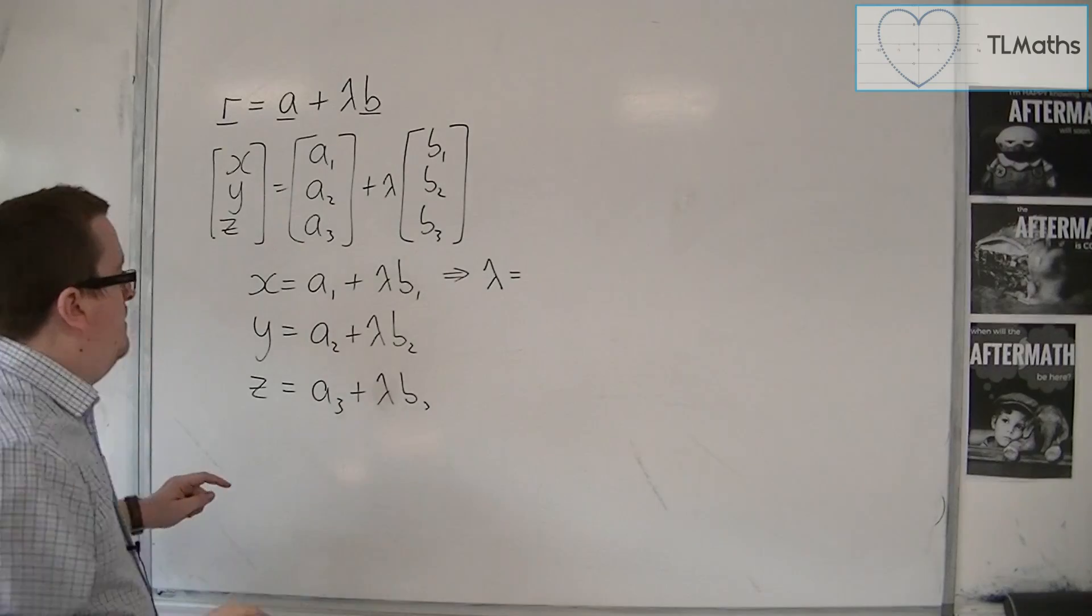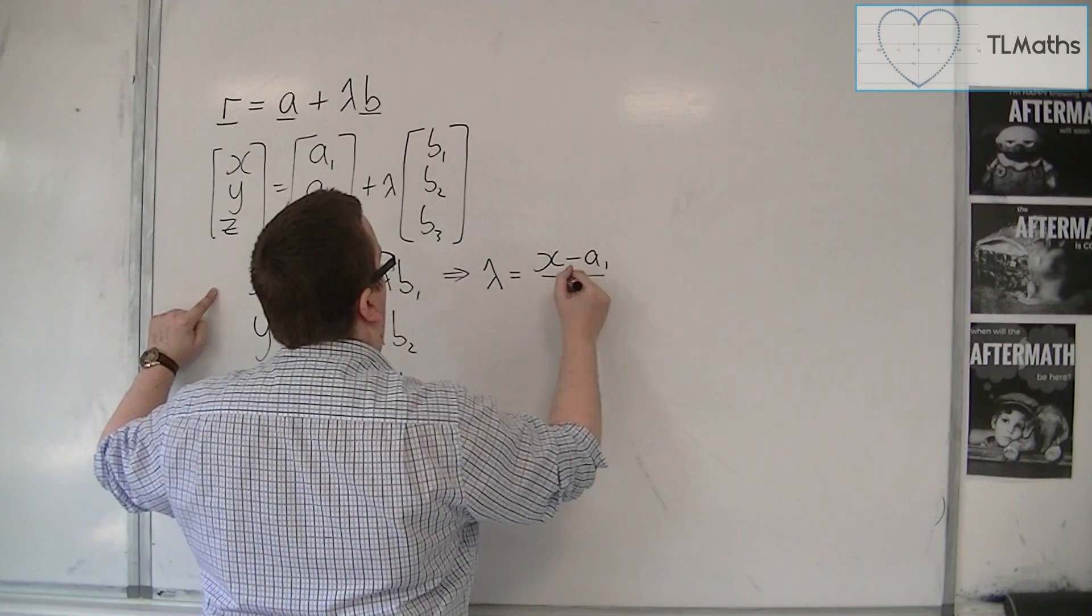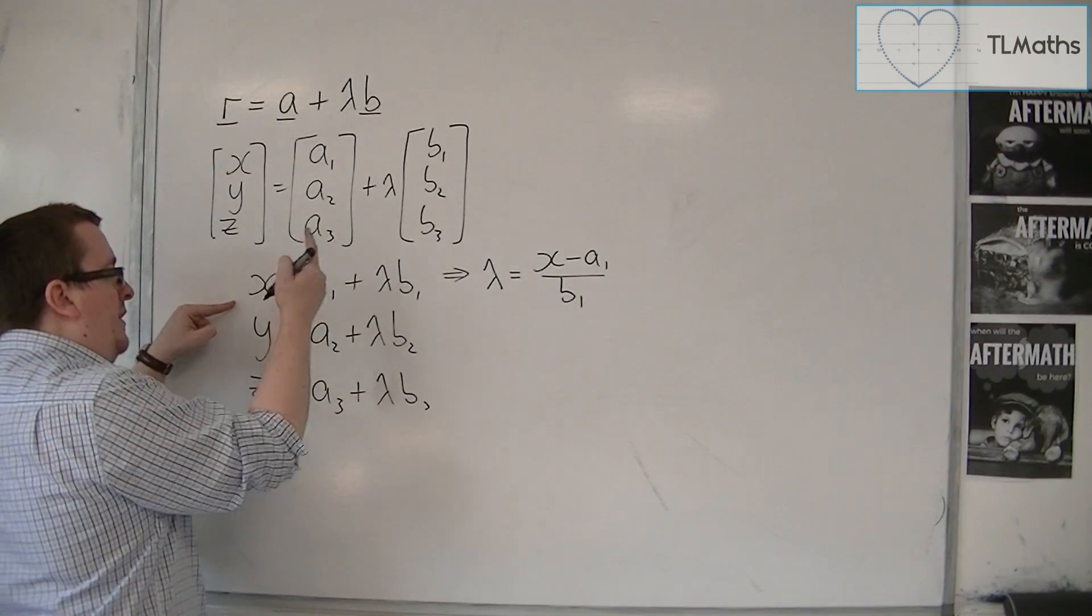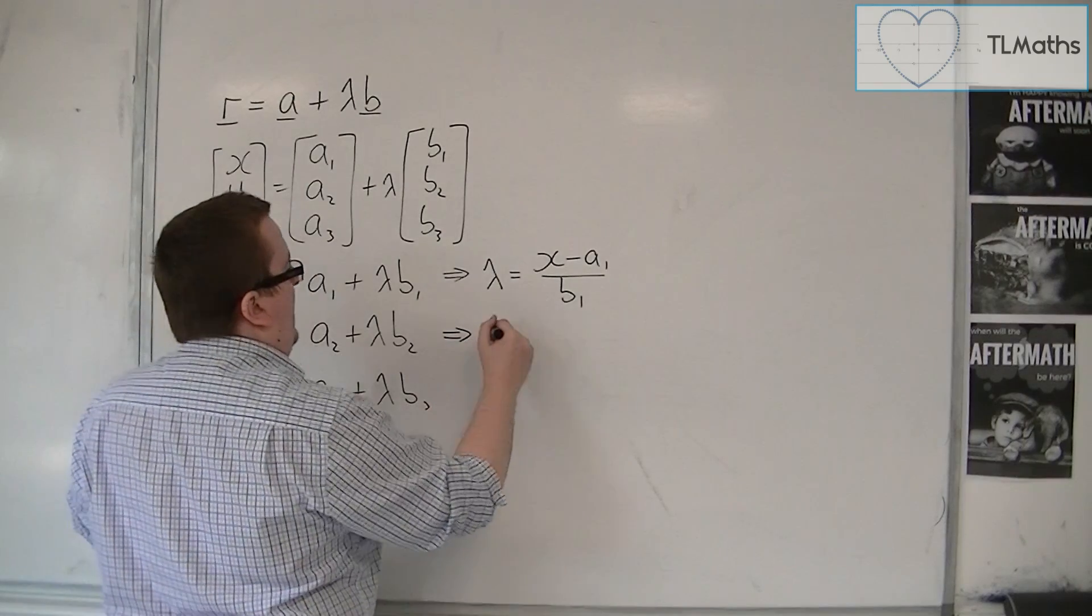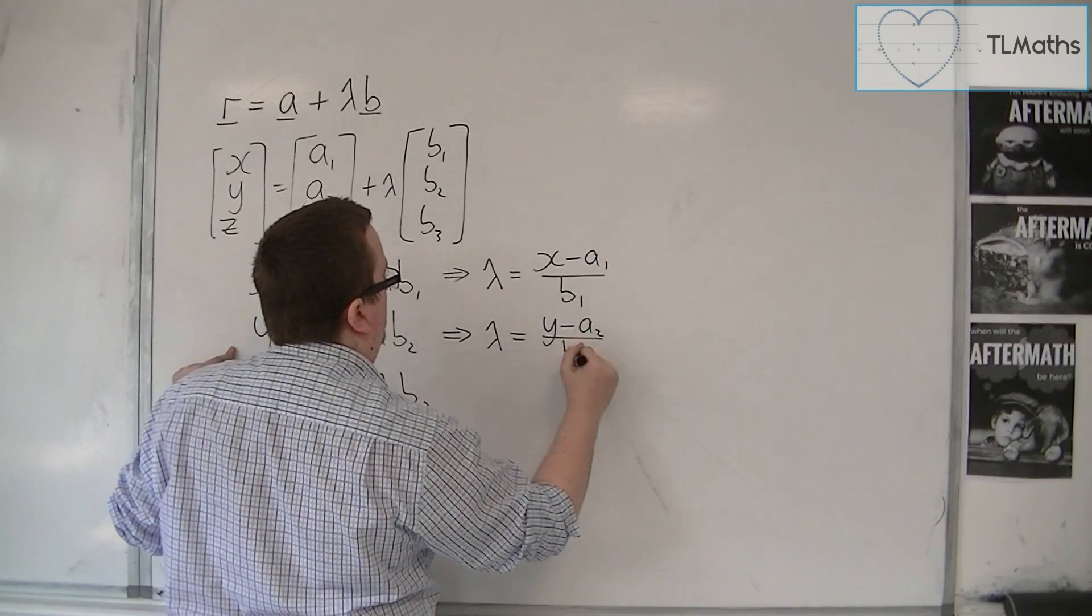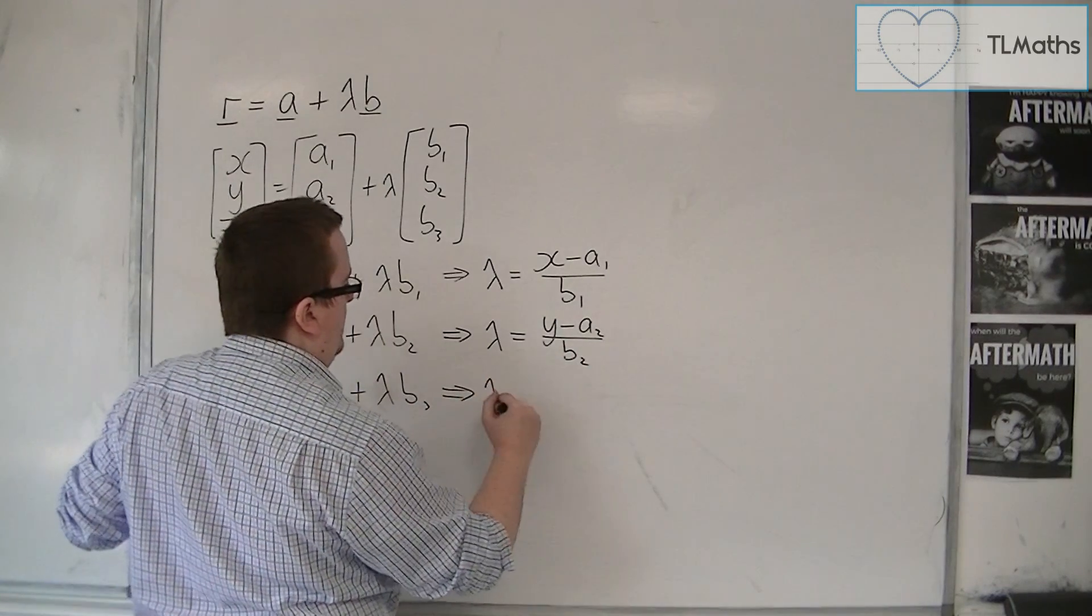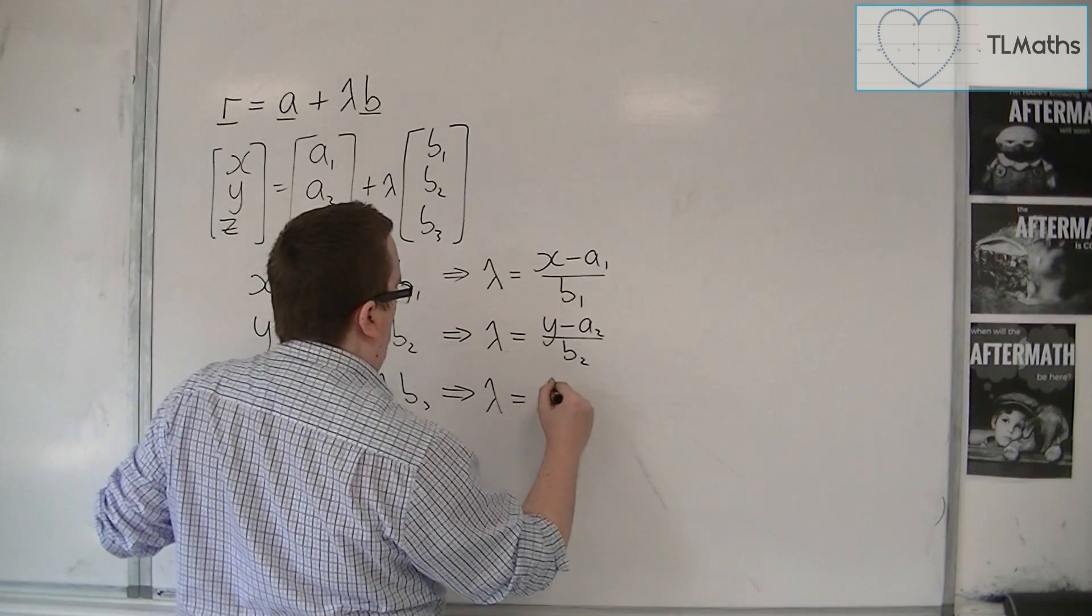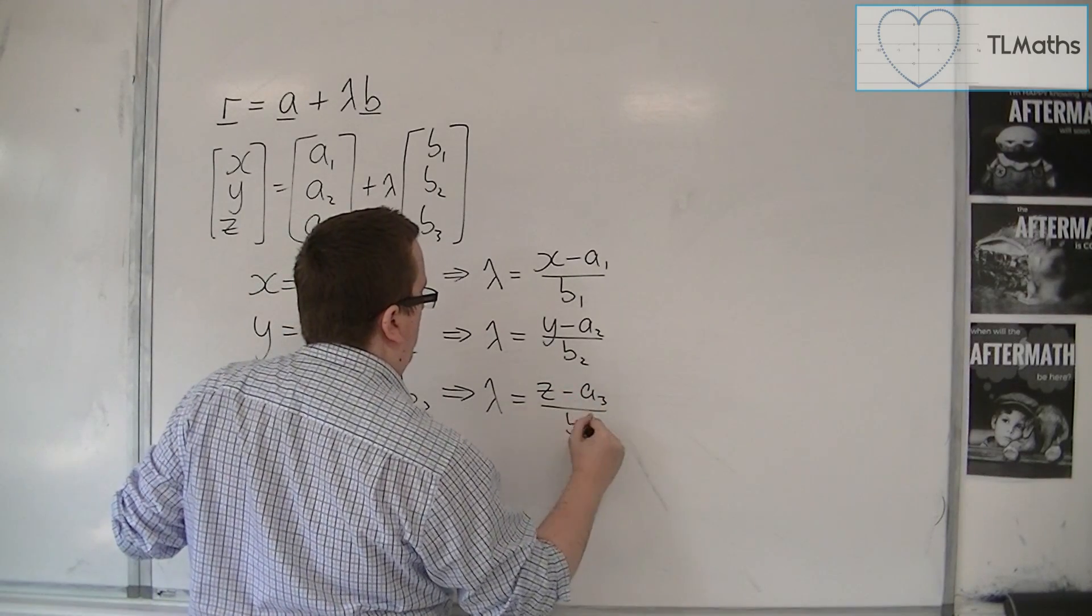So lambda is equal to x minus a1 over b1. So take a1 from both sides, divide both sides by b1, and lambda here would be equal to y minus a2 over b2. And for this one, I'd have lambda is z minus a3 over b3.